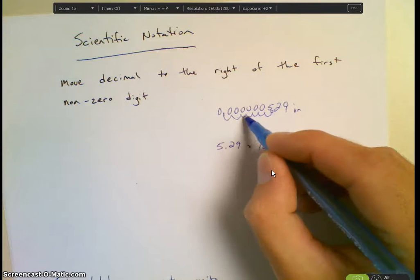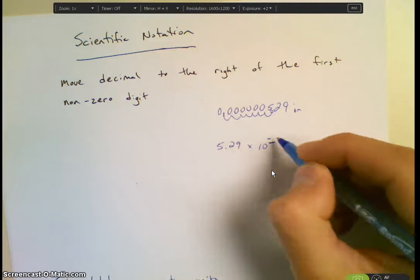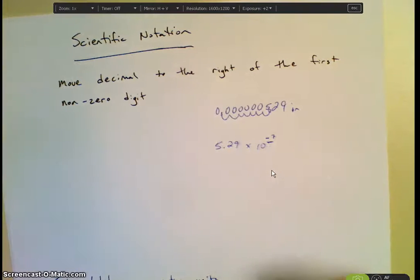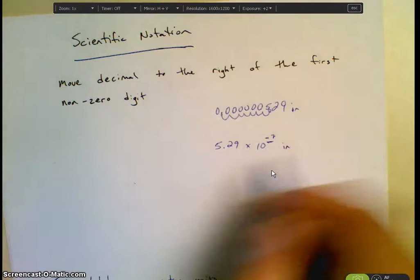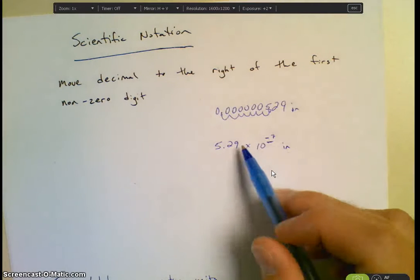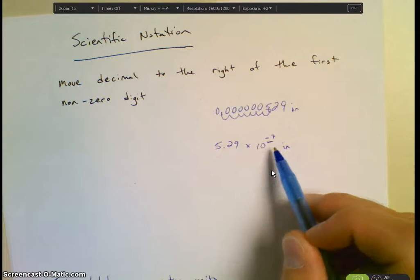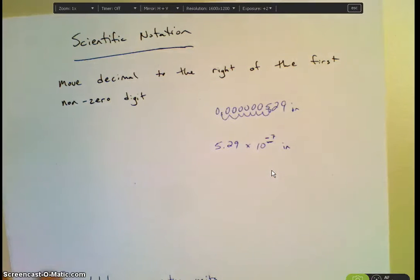So in this case, it would be 1, 2, 3, 4, 5, 6, 7. It would be a negative 7 in this case. And then we put the units out on the end so that the unit does not go next to the 5.29. It goes outside of the multiplier. Does that make sense? So let's look at the examples on the notes.